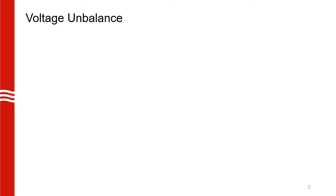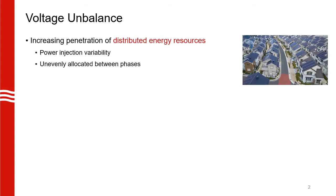I'll start off by giving a brief overview on voltage unbalance. As you might know, there has been a growing number of installations of distributed energy resources like rooftop solar PV. These resources have some uncertainty associated with their power injection and they are not allocated evenly between the three phases of distribution grids. This gives rise to a power quality issue called voltage unbalance.